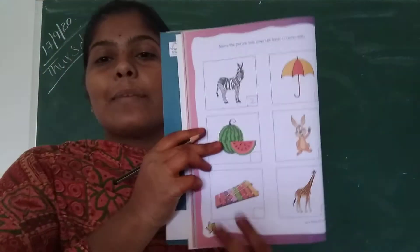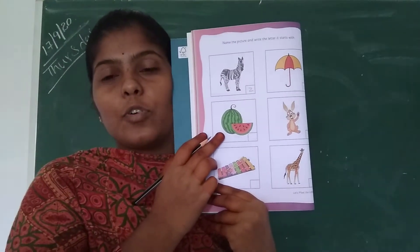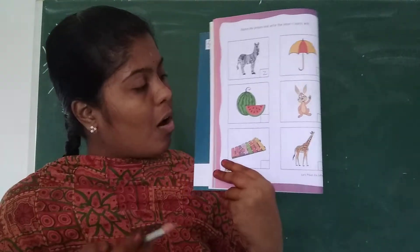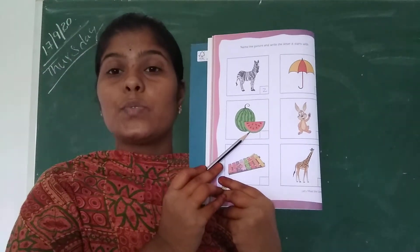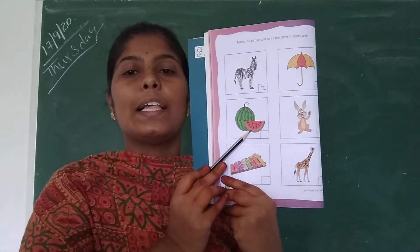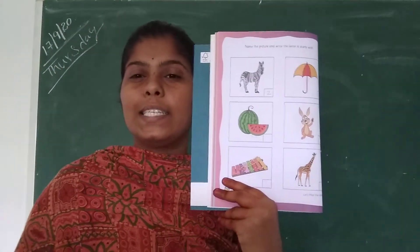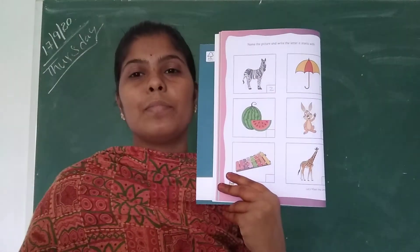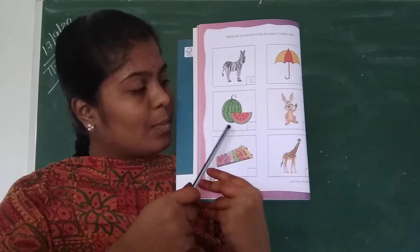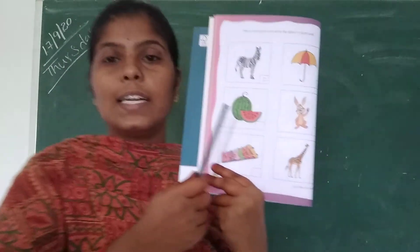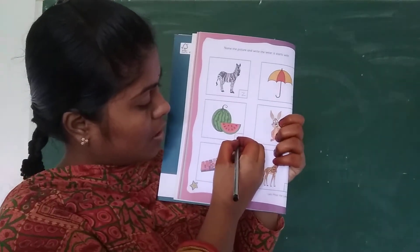What is this fruit name, children? It is watermelon. This is watermelon. It is very good for health. What is the starting letter of watermelon? W-A-T-E-R-M-E-L-O-N. The starting letter of watermelon is W.